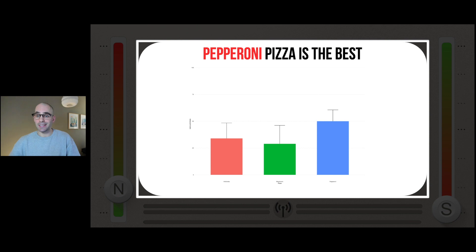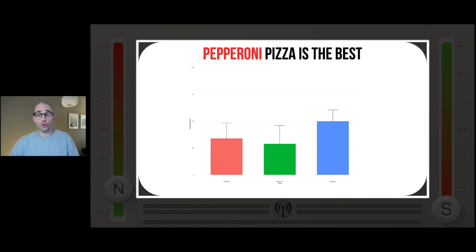Empirical evidence suggests that data visualizations with low levels of noise — ones that are not cluttered — are perceived as clearer but also as more professional and more aesthetic. But the plot as it is right now is still not clear. We removed all the noise, but the signal is still really low. So next we will ramp up the signal step by step.